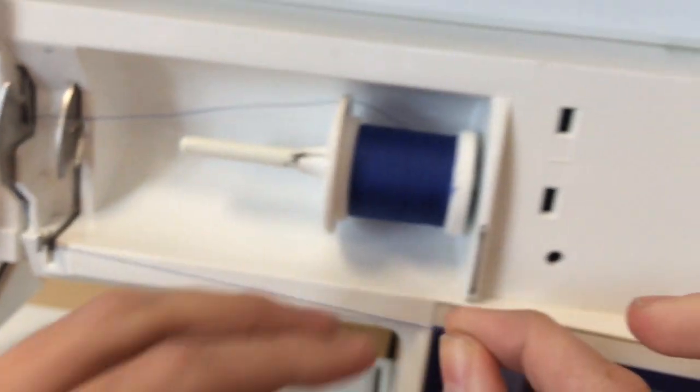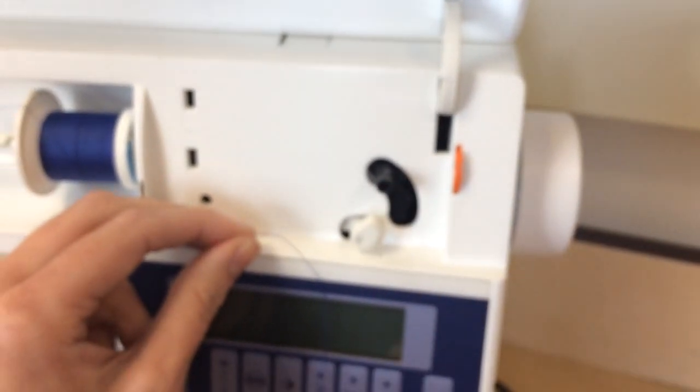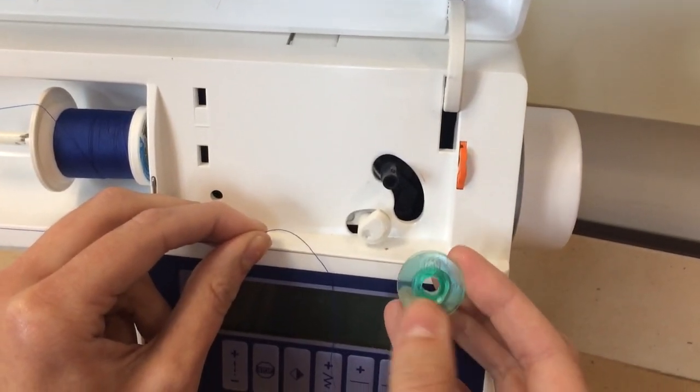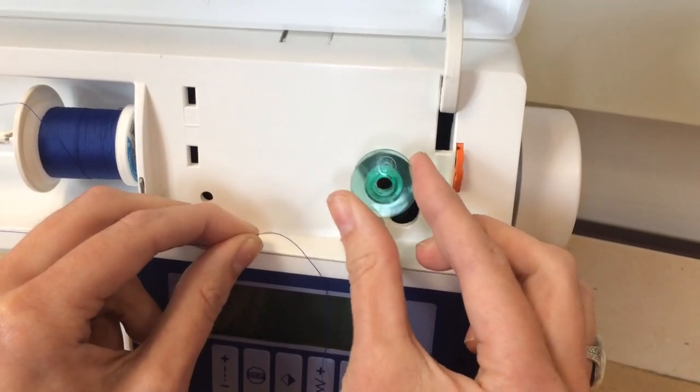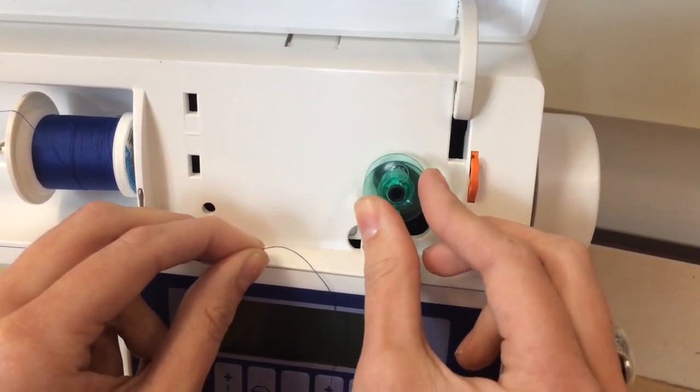Now take your thread and pull it over to your bobbin winder. Take your bobbin and make sure the letter is facing you. You'll feel it - it's an H or a V. Put your bobbin on the bobbin winder with the letter facing you and push it into place until it locks.